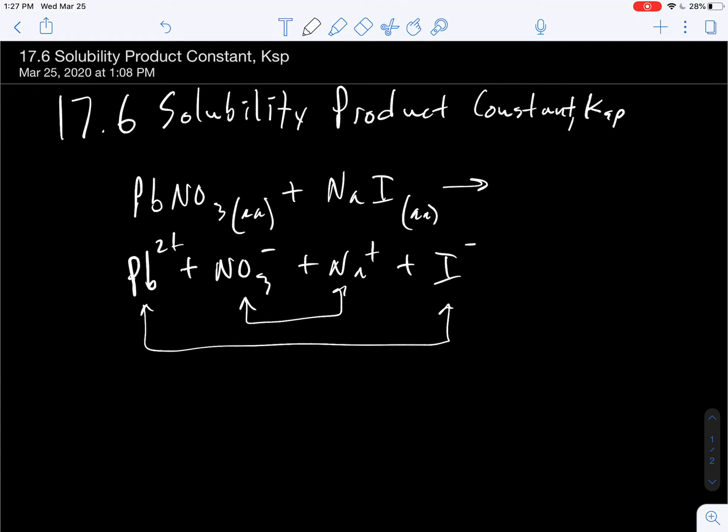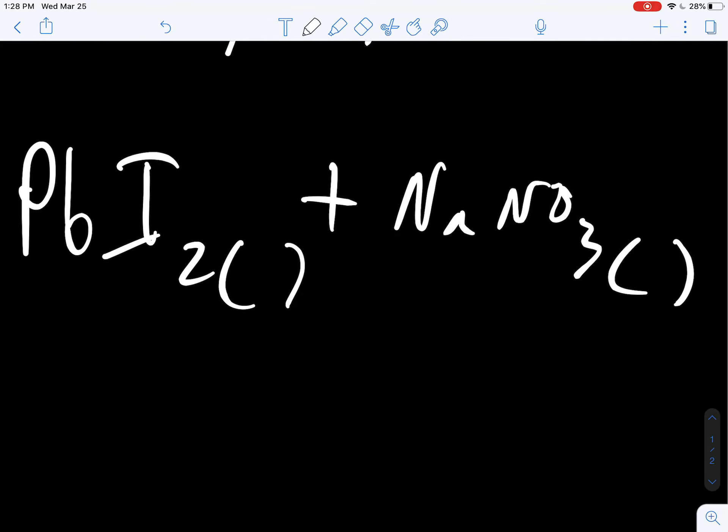So the potential products are lead iodide plus sodium nitrate. And then we use solubility rules to predict whether these should be aqueous or solid. Halides usually aqueous, but with one of these, we predict to be solid. And this we'd predict to be aqueous.